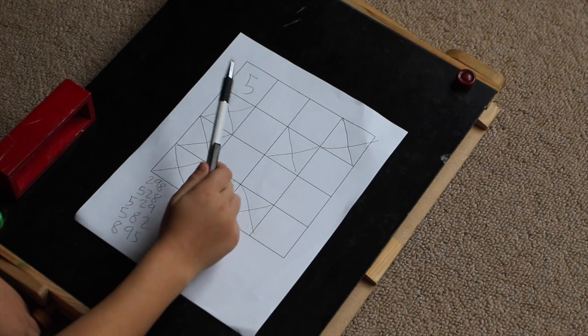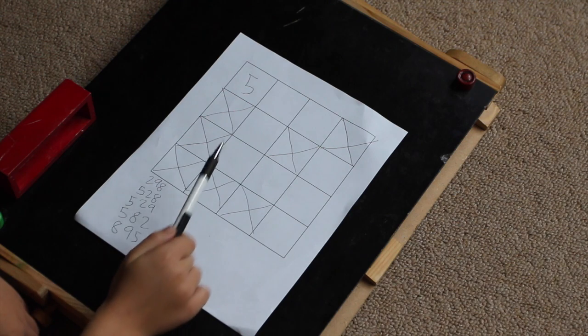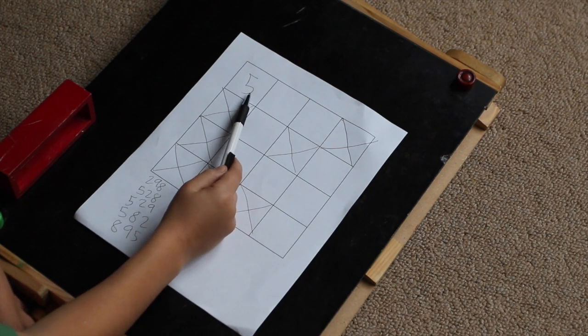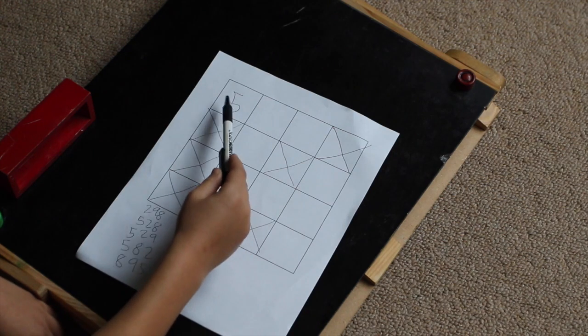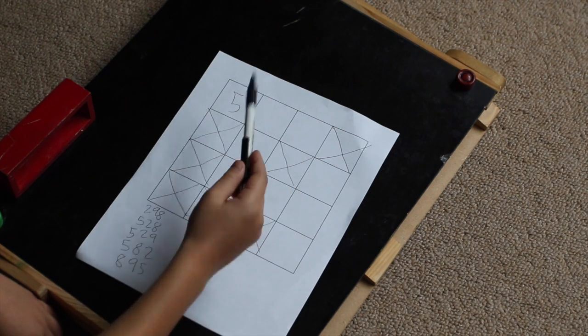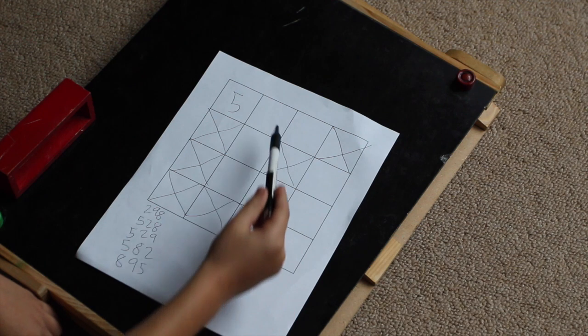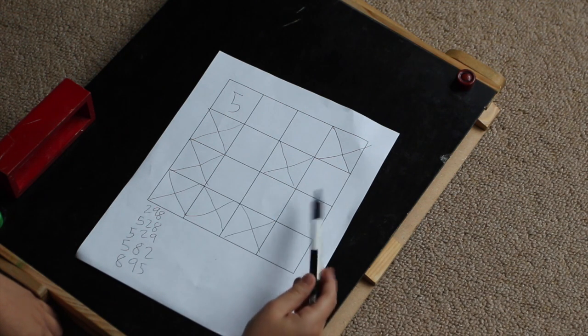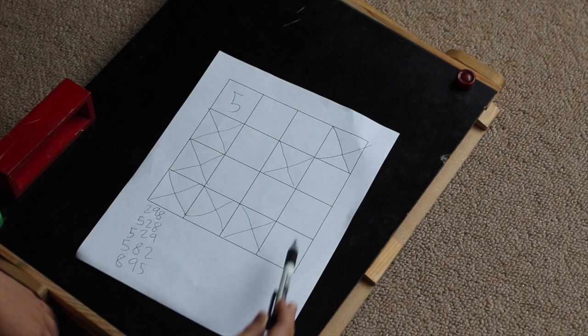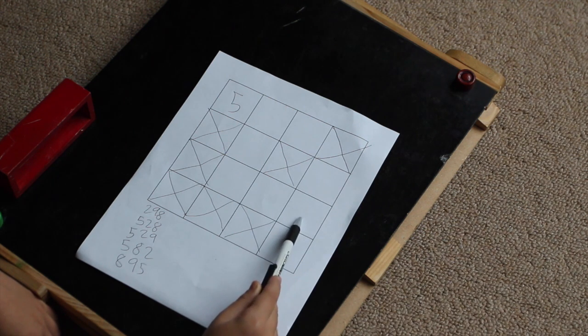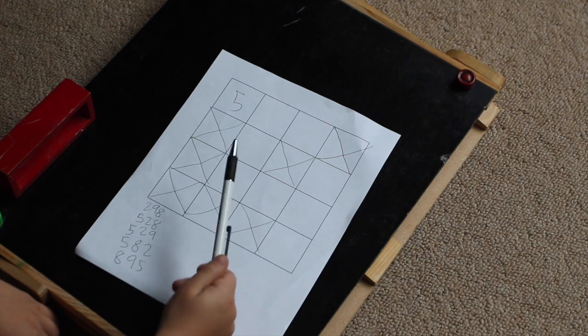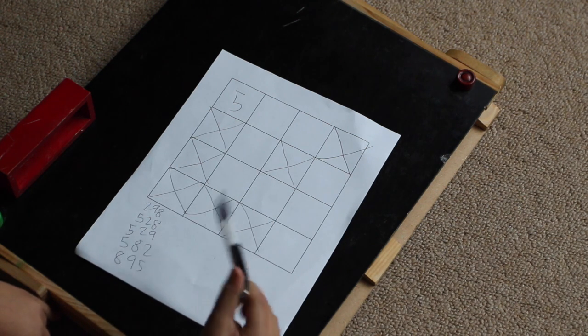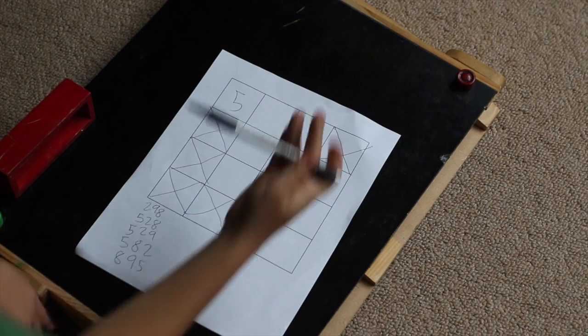This is either 528, 529 or 582 since it starts with a 5. If it's 528 or 529 then 298 and 895 and in the middle there's no 5s of any number. So that won't work. So it has to be 582.